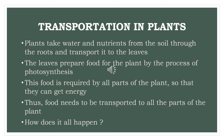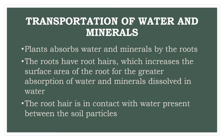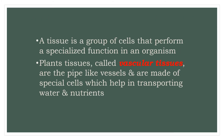Thus, food needs to be transported to all the parts of the plant. But how does all this happen? Plants absorb water and minerals through the roots. The roots have root hairs which increase the surface area of the root for greater absorption of water and minerals dissolved in water. The root hairs are in contact with water present between the soil particles. A tissue is a group of cells that perform a specialized function in an organism.